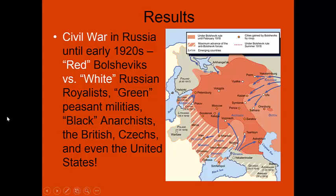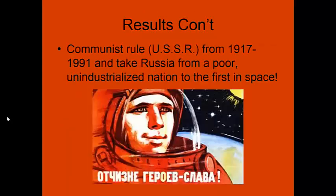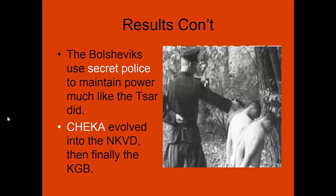After establishing their government, the communist Bolsheviks used a secret police to maintain power, much like the Tsars did. With all those different elements — Greens, Blacks, Whites — within Russia who didn't like the Soviets, the secret police was crucial. The Cheka evolved into the NKVD and then eventually into the KGB. The current president of Russia, Vladimir Putin, is a former KGB agent himself. The secret police used brutal methods to keep the various elements in the Soviet Union suppressed.